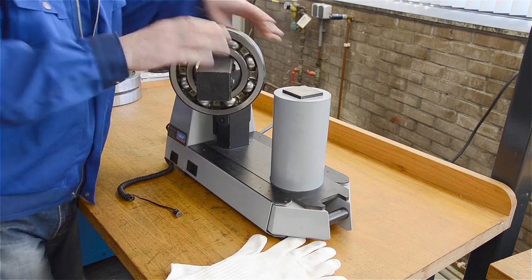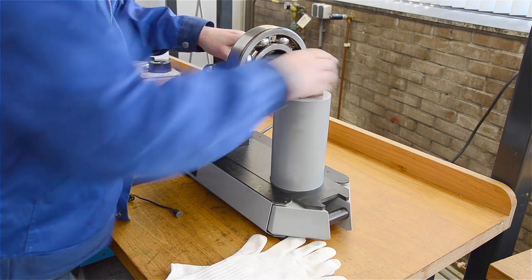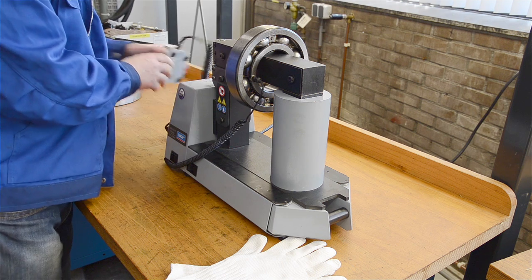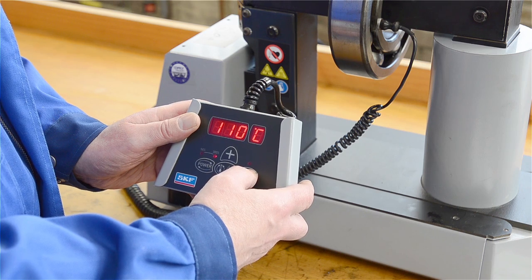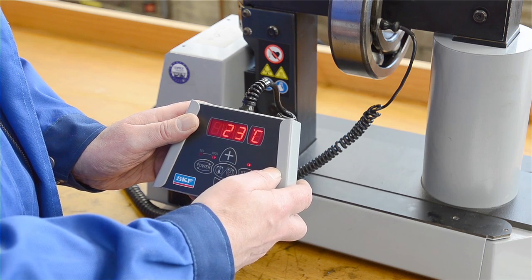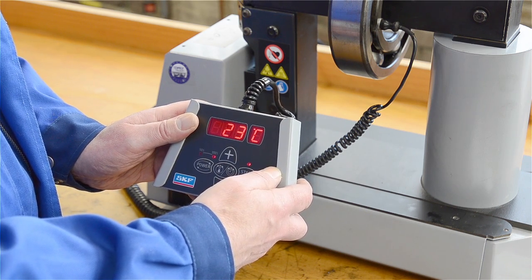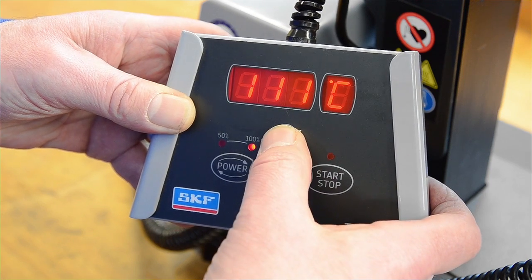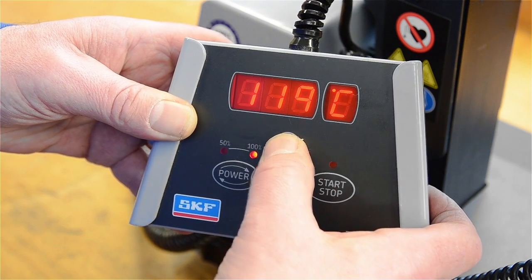Place the bearing on the heater and then place the temperature probe on the bearing inner ring. Press the start button on the remote control and the bearing starts heating. The preset temperature is 110 degrees Celsius, but you can also choose the temperature you want.